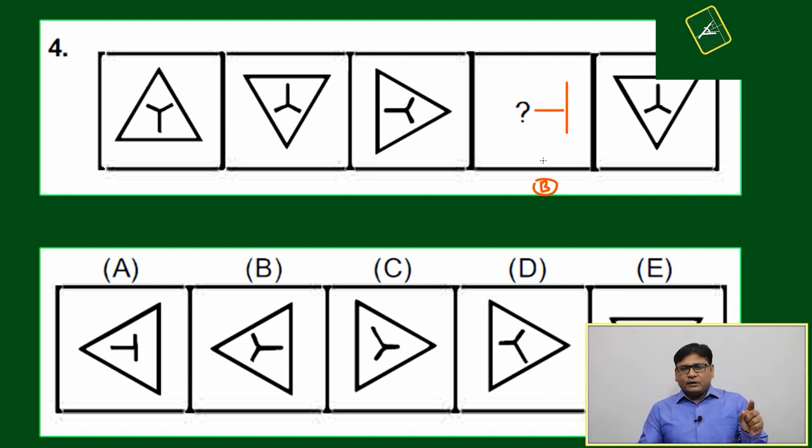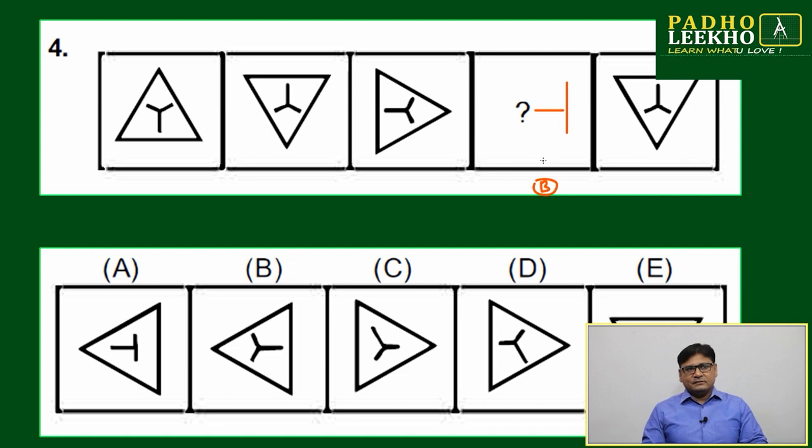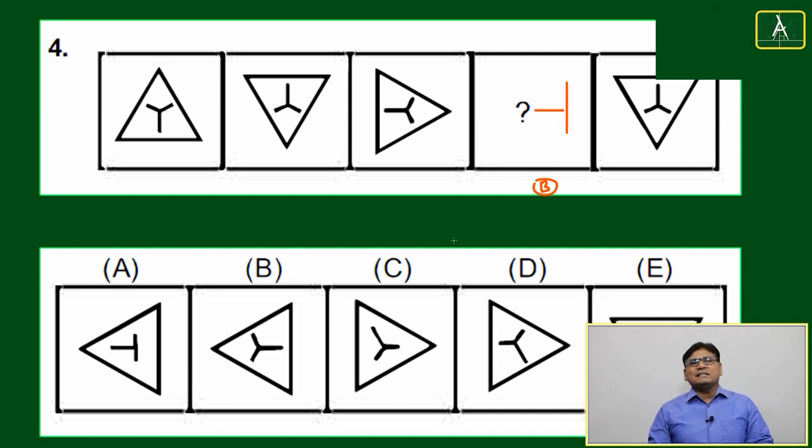Now, which type of question are we dealing with? We are looking at the missing image. Like five images are given, one is missing.